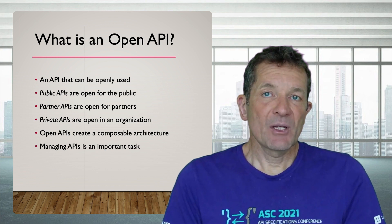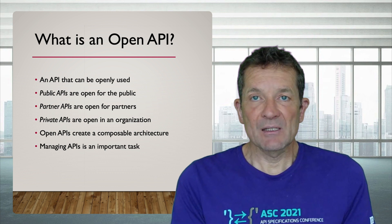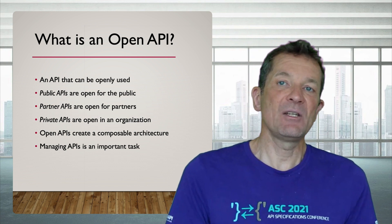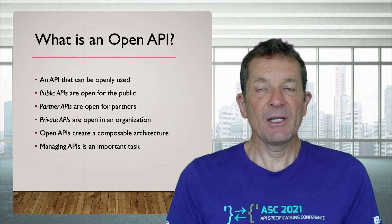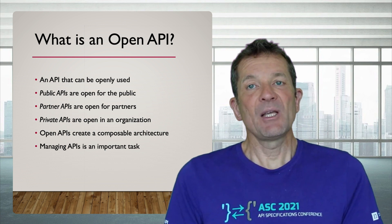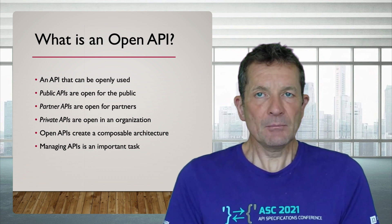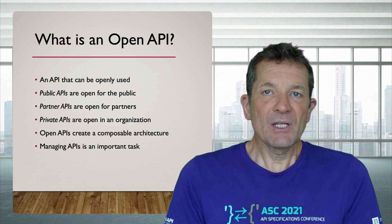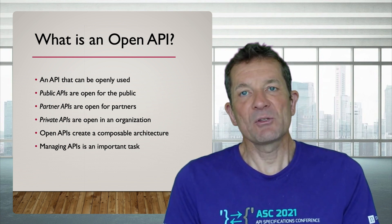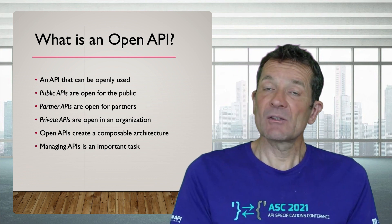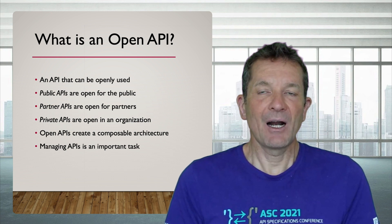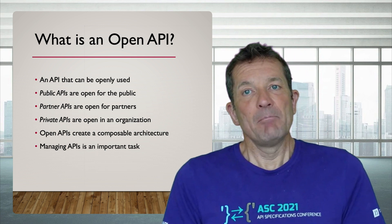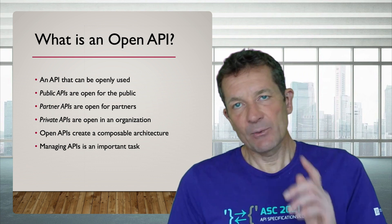The third class of openness is a private API, meaning it's used just inside your organization. Organizations trying to become more flexible create APIs intended to be open internally. All of these are different levels of openness, and for all of them the end goal is to create a composable architecture — meaning you can build new things by building on existing things made available through APIs.